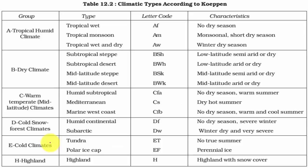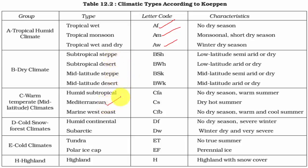These categories are divided into subcategories. The tropical humid climate is classified into three subcategories: tropical equatorial or rainforest climate, tropical monsoon climate, and wet and dry or savannah type climate. Under dry climates we have semi-arid regions and subtropical deserts. Under warm climates we have the Mediterranean climate, marine west coast, and humid subtropical. All these things have been classified very specifically and we'll see them in detail.